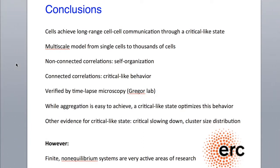In conclusion, we showed that exceptional long-range cell-cell communication is achieved by a critical-like state known for phase transitions in physical systems. We established a multiscale model covering single cells and reaching out to thousands of cells. We looked at the non-connected correlations and found evidence for self-organization. We looked at the connected correlations and found evidence for critical-like behavior in this finite system. We verified our predictions from the simulations by applying the exact same analysis algorithms to time-lapse microscopy data from the Thomas Gregor lab. While aggregation is very easy to achieve, a critical-like state — a fine-tuned state — optimizes the behavior in terms of correlation lengths and spatial information.